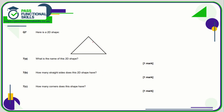Question seven: the name of this 2D shape is a triangle. How many straight sides does it have? One, two, three. How many corners does it have? Also one, two, three.